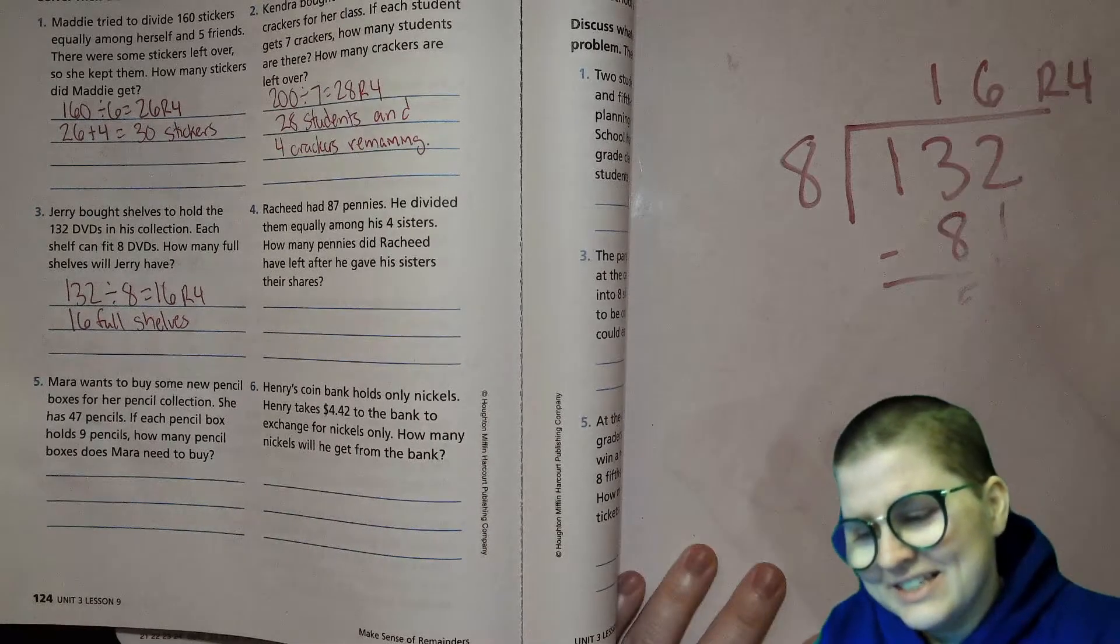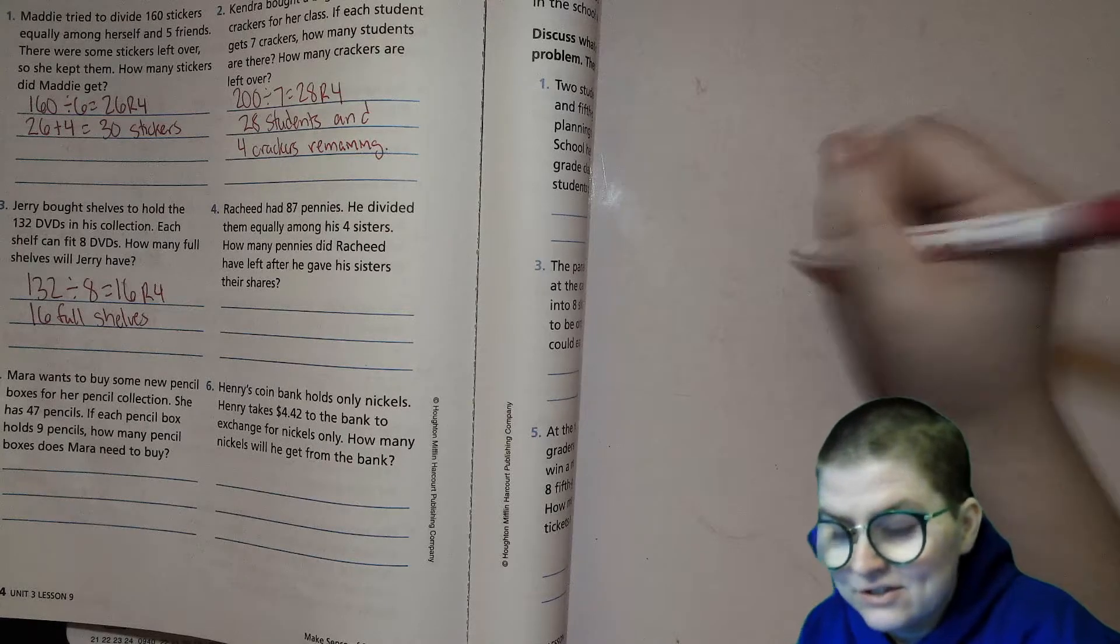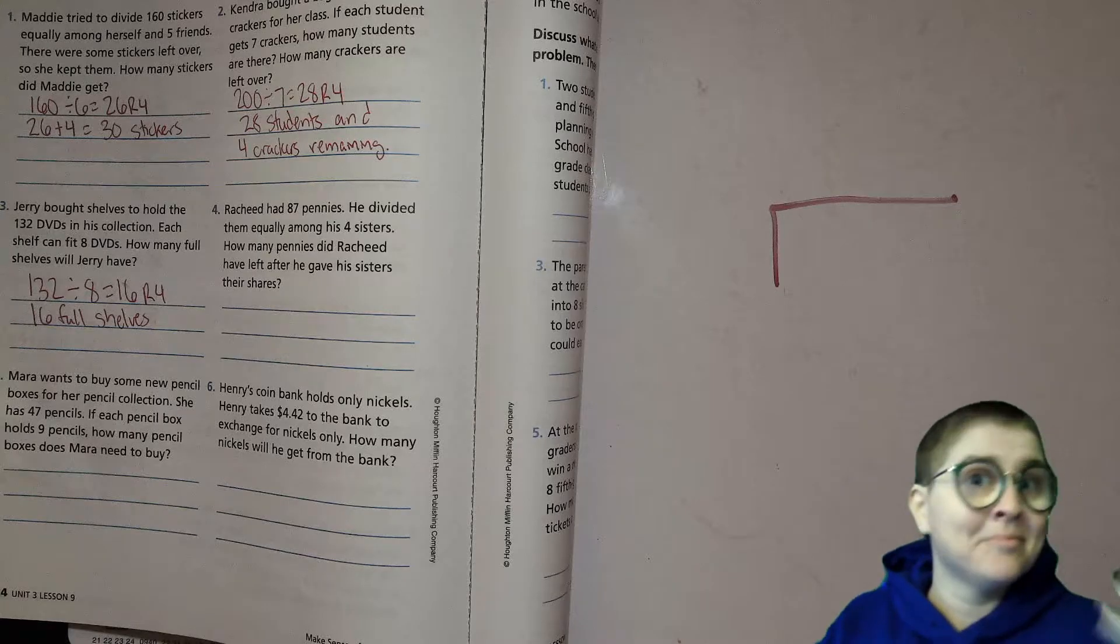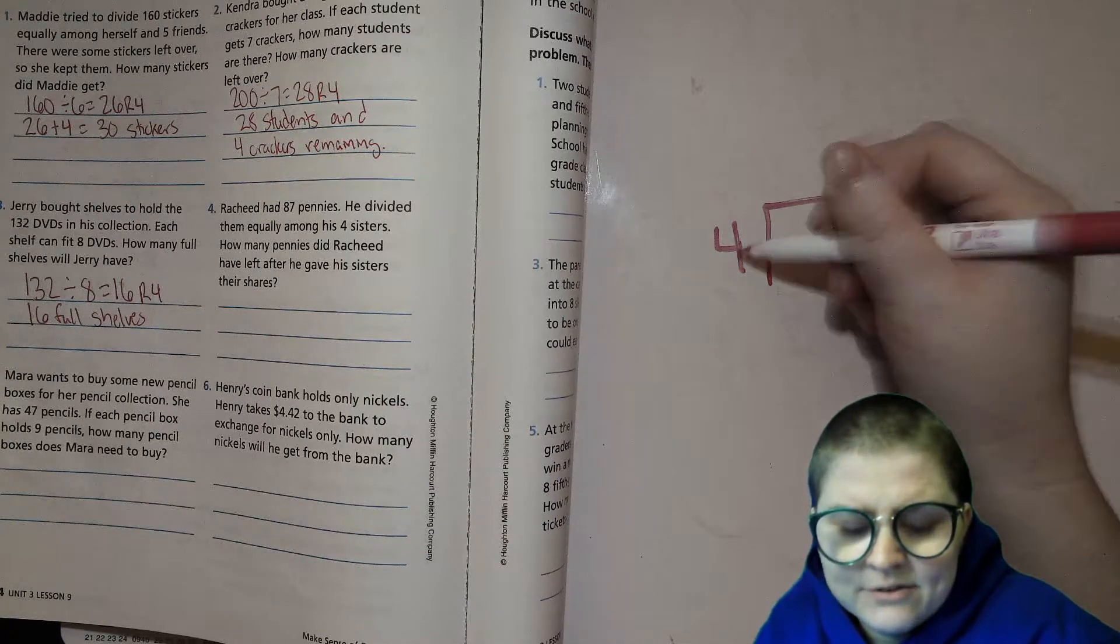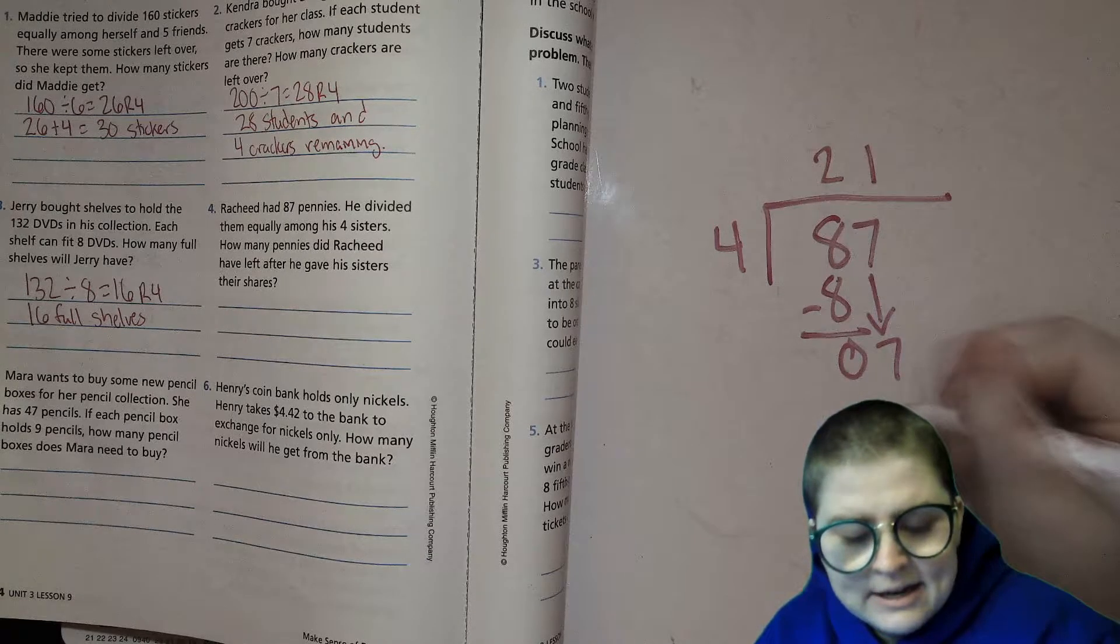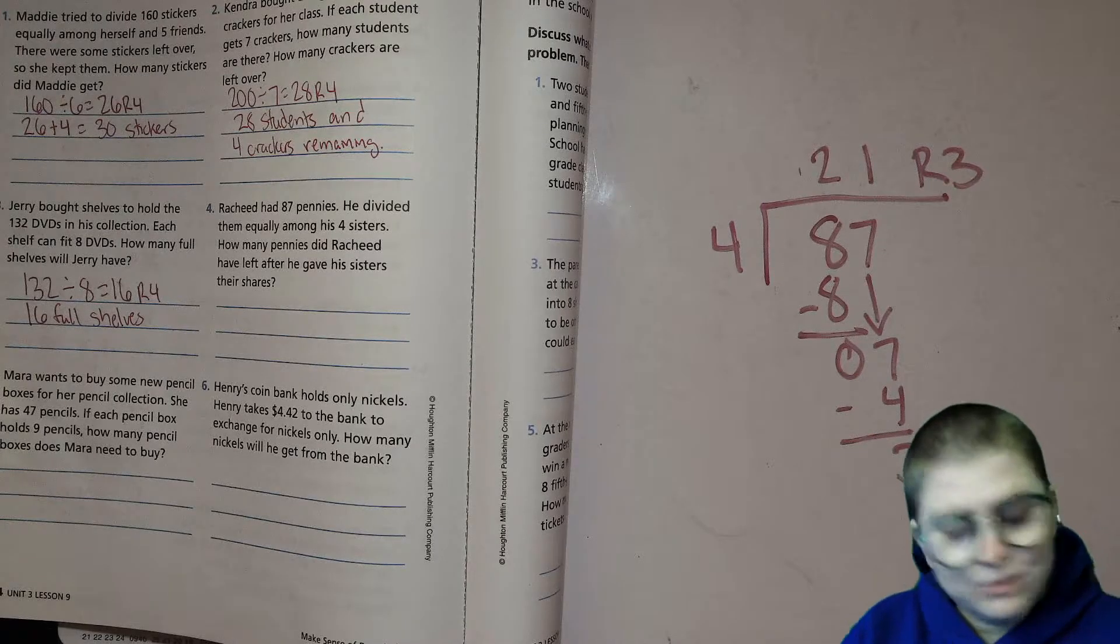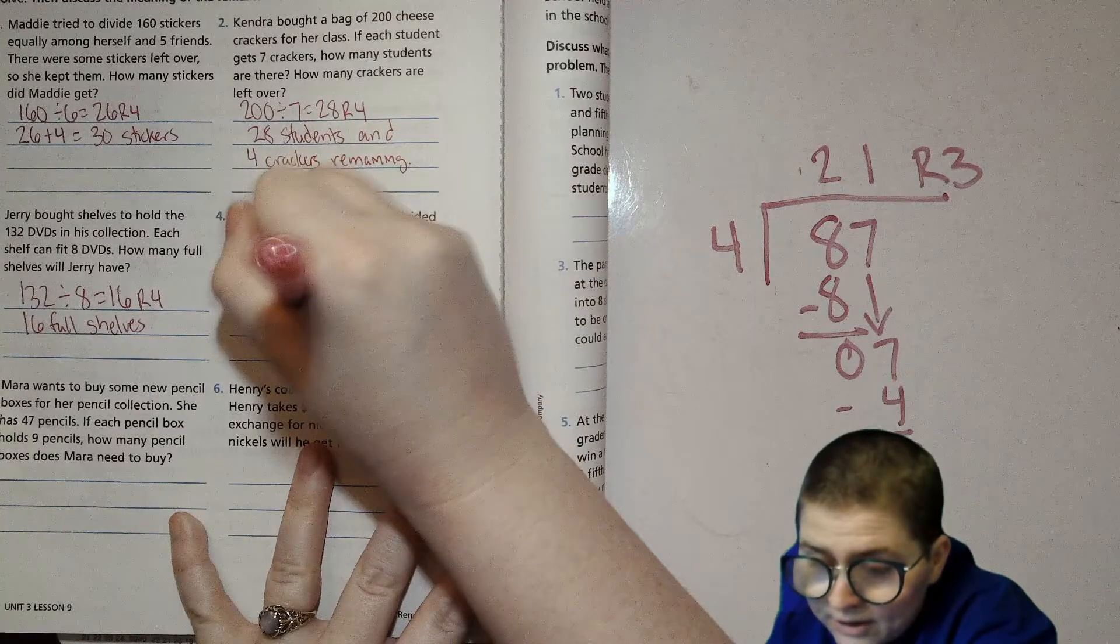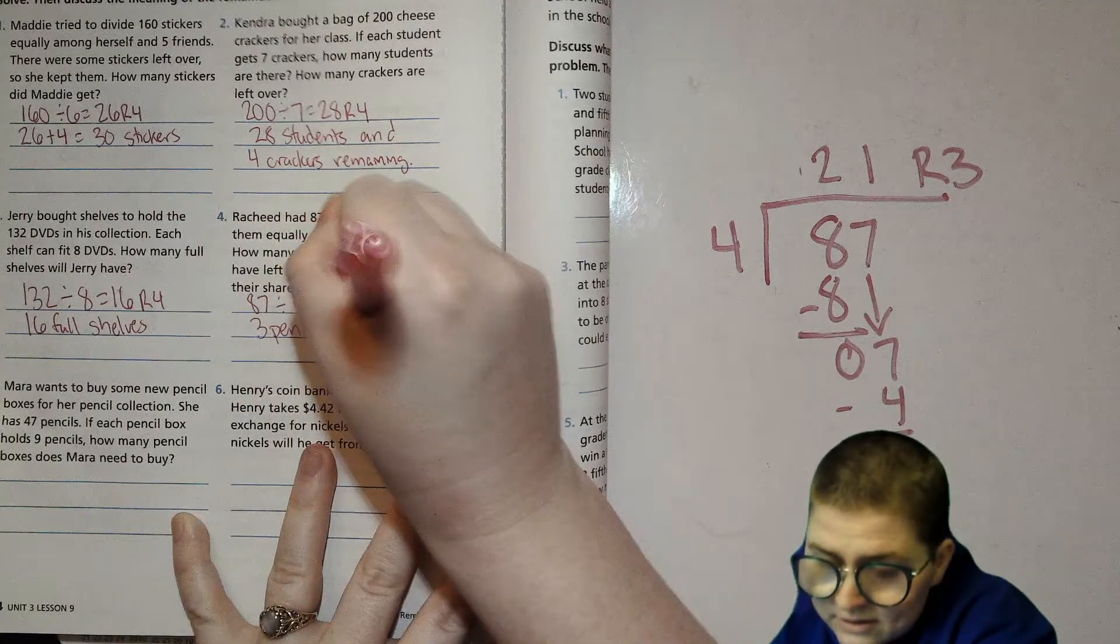Number 4: Rashid had 87 pennies. He divided them equally among his four sisters. How many pennies did Rashid have left after he gave his sisters their shares? After he's divided it, he's looking at what is remaining, which means the only part we really care about is the remainder. So 87 divided by 4. 4 goes into 8 twice and you'll get 8, bring that 7 down. 4 goes into 7 once and you get 4, and you have 3. So 21 remainder 3. 21 goes to each sister, 3 is what he has left over. So we'll write the equation: 87 divided by 4 equals 21 remainder 3. 3 pennies left, that's the only part we needed.